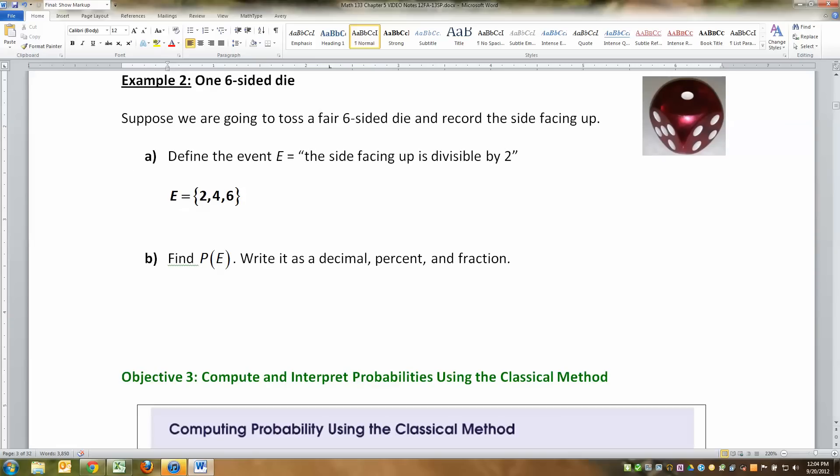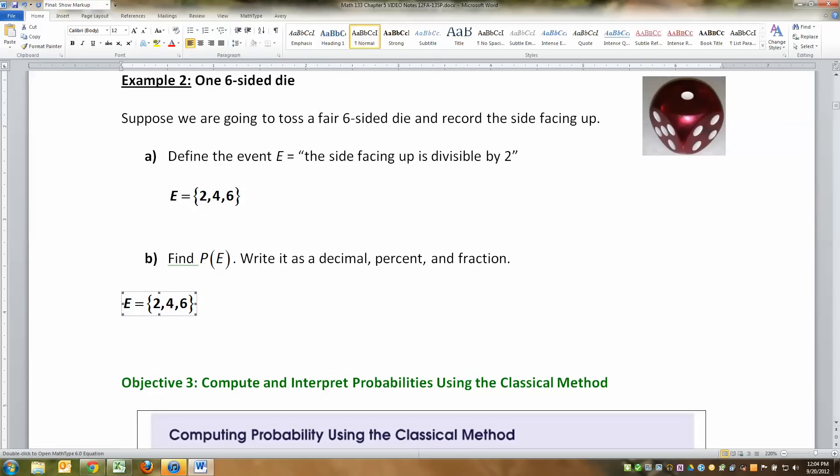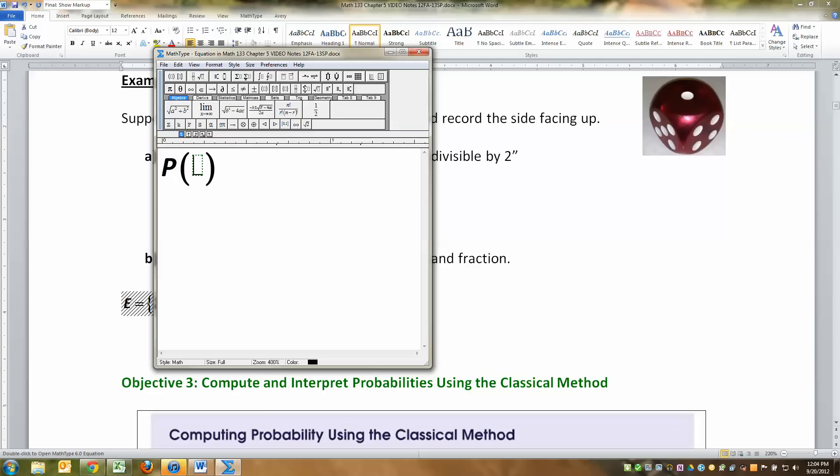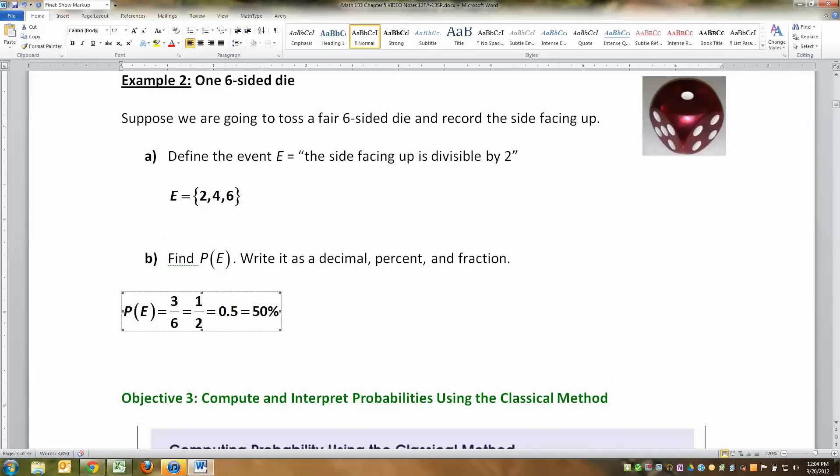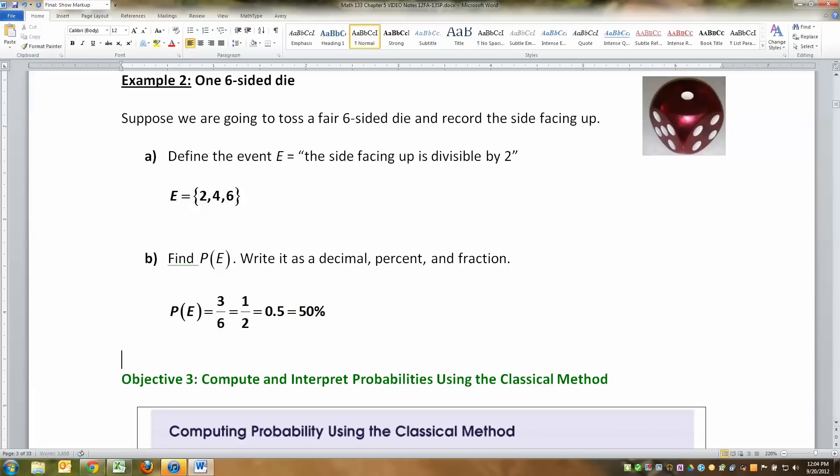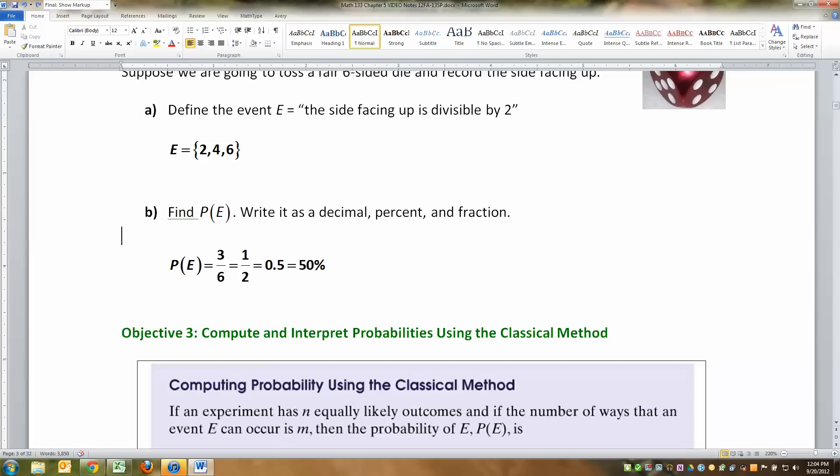What about the probability of E? If that's event E, the probability of E, capital P of E, is equal to, well, there's three sides out of six sides total, which we all know, hopefully, is a half, which is 0.5, or 50%. And I wrote it all different ways so you could see it. There's a fraction, there's a decimal, there's a percent. Sometimes we want the reduced fraction, sometimes we don't. It just depends. It's just a question of ease for our own sanity's sake.